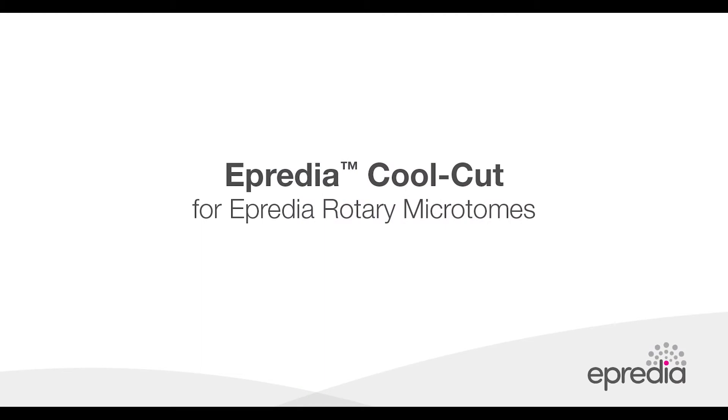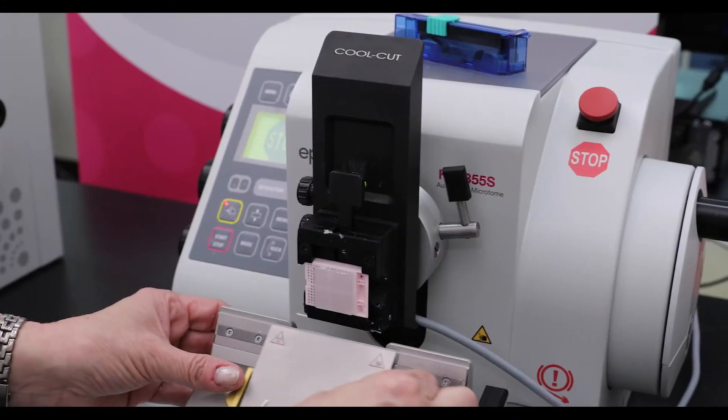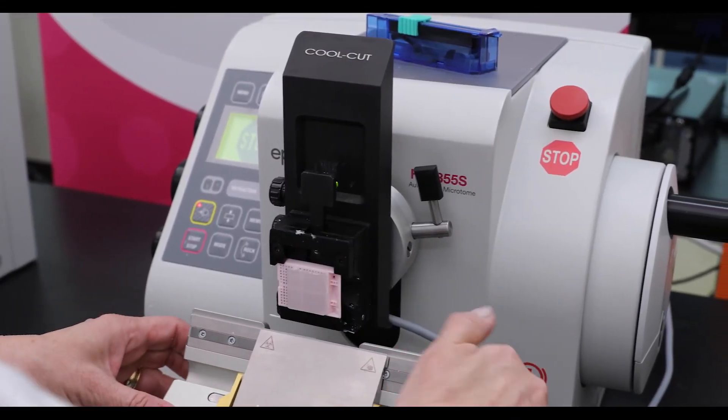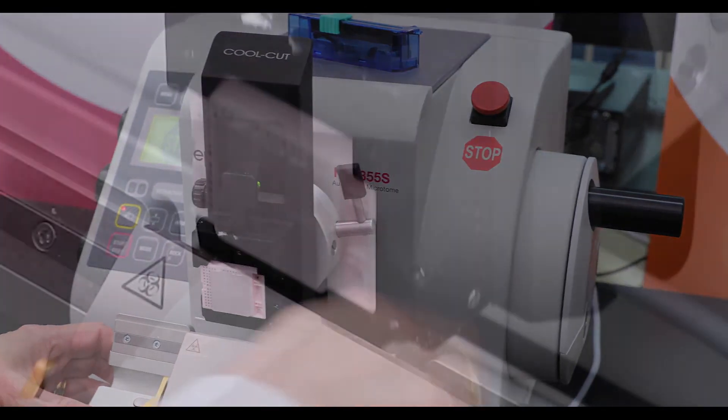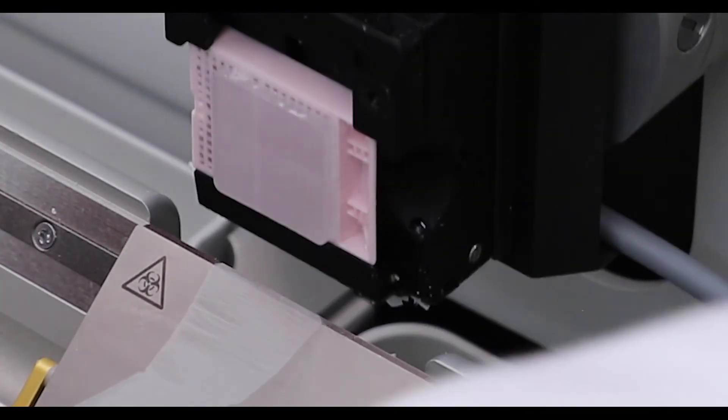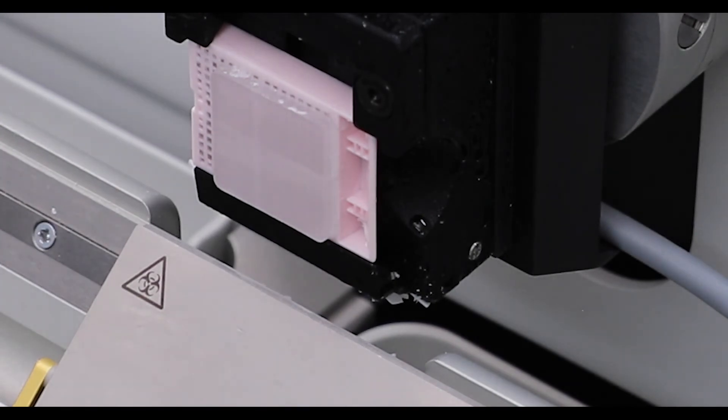Another accessory for the Epredia rotary microtomes is the cool cut. This is an actively cooled specimen clamp designed to keep samples cold to ensure good section quality and is especially good when taking multiple sections. The clamp temperature is maintained at 16 degrees Celsius below ambient temperature.